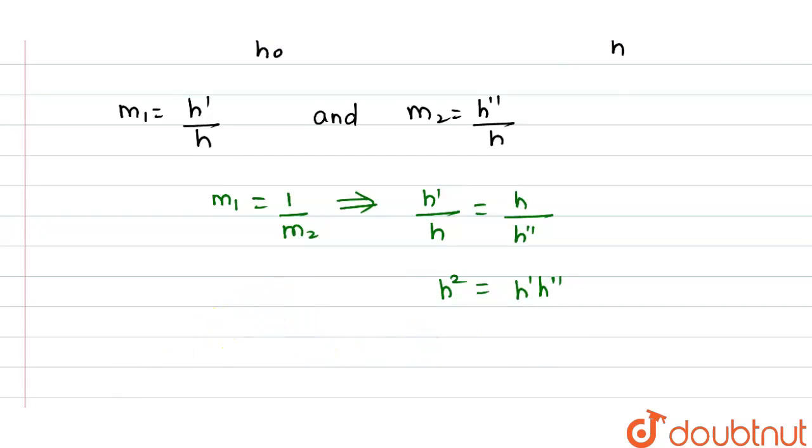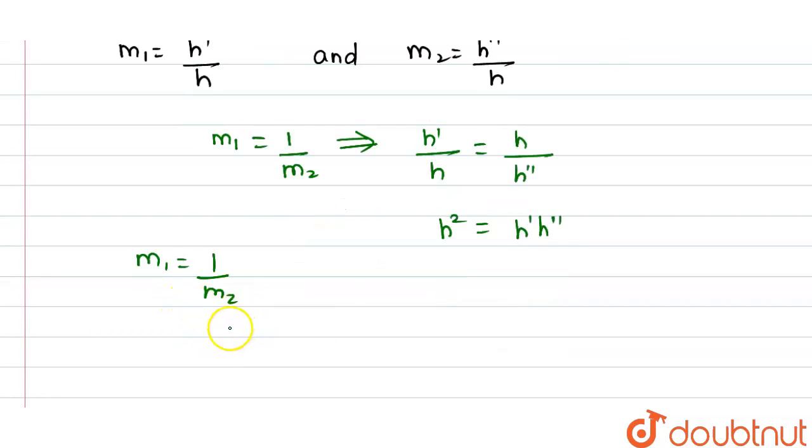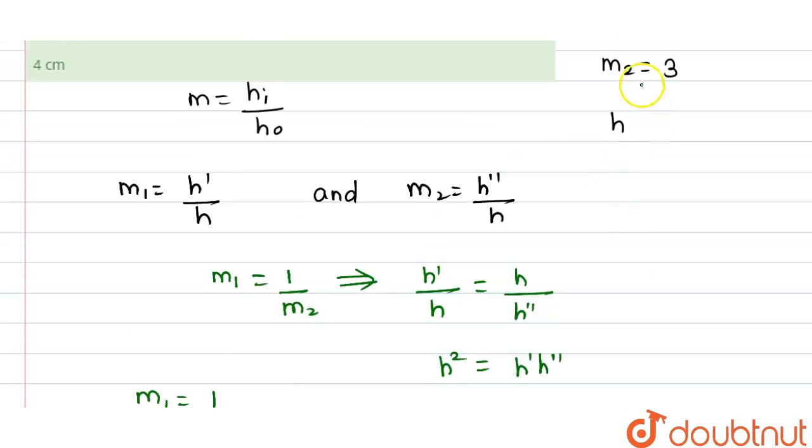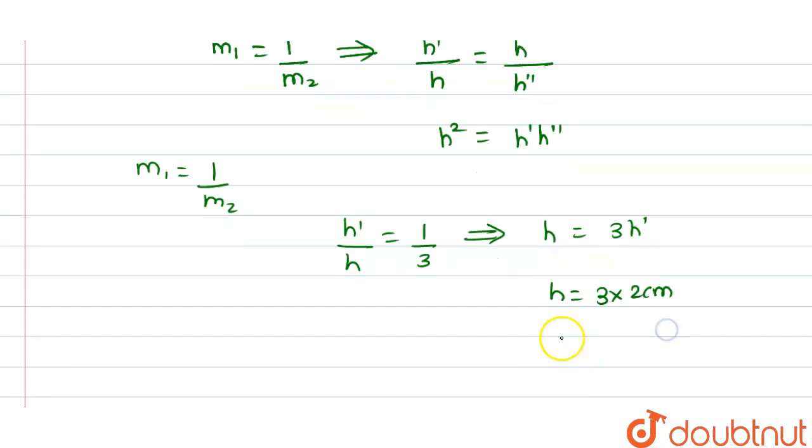We can solve this in another way also. m₁ = 1/m₂, and we know the value of m₂ is 3. So m₁ = h'/h = 1/3. Therefore, the value of h equals 3 × h'. We know h' is 2 cm, so h = 3 × 2 cm. The height of the object is 6 centimeters. Thank you.